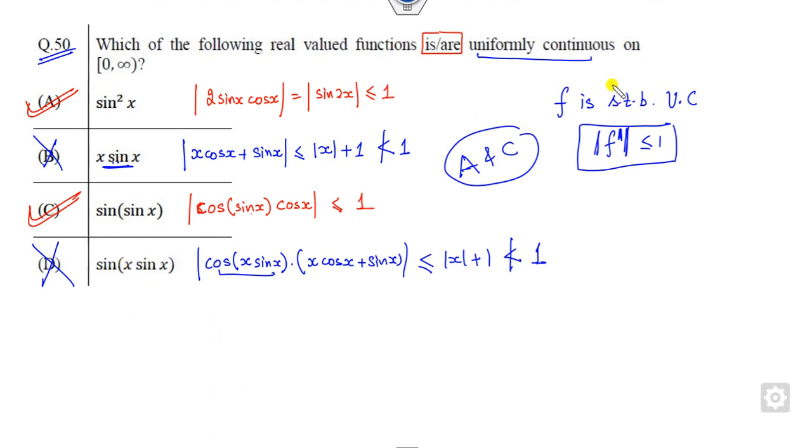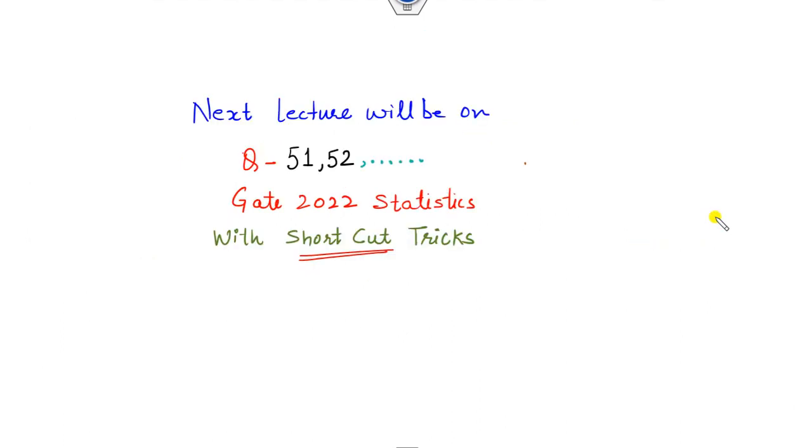So you can remember these shortcut tricks whenever they are asking in coming examinations. Any function is said to be uniformly continuous when its first derivative is bounded by 1. I hope you can learn these shortcut tricks. We will solve some other questions, 51, 52, and others in the next lectures related to the same 15-second shortcut tricks for you.